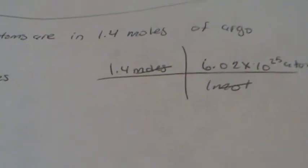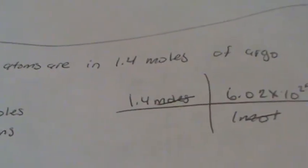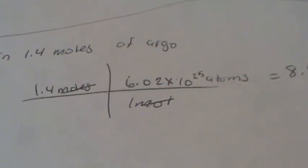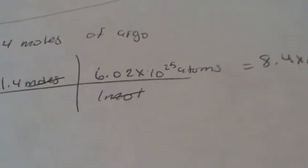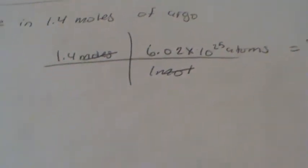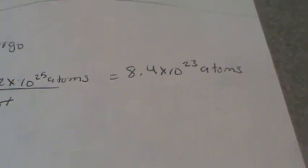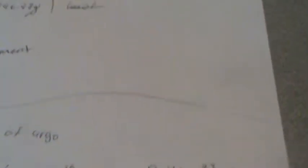Our given is 1.4 moles, which will be this number. And we put our Avogadro's number, which will be 6.02 times 10 to the 23rd atoms over one mole. And then, our final answer will be 8.4 times 10 to the 23rd atoms.